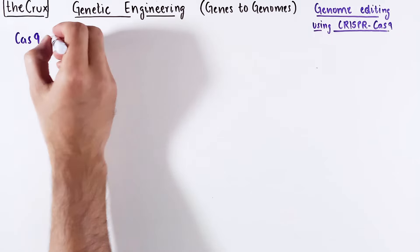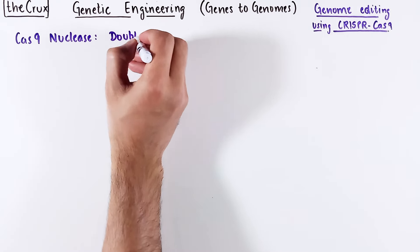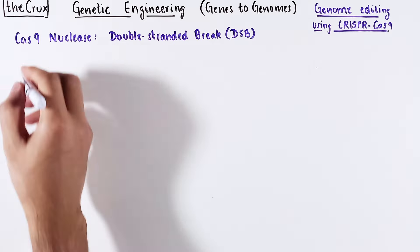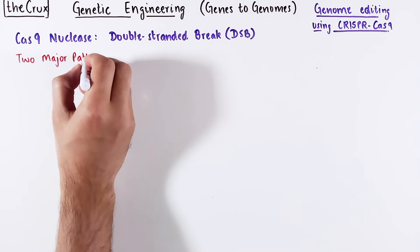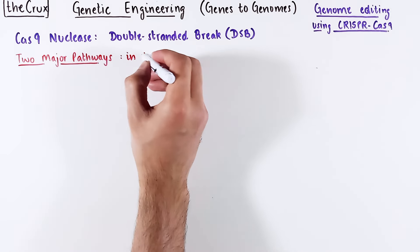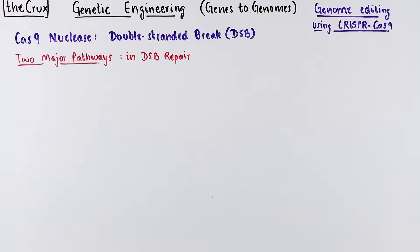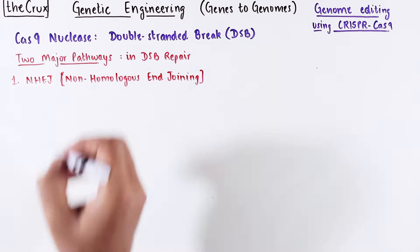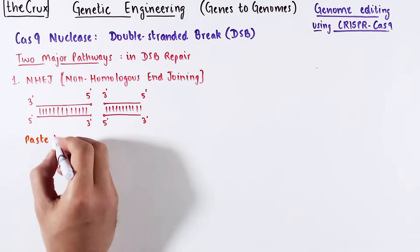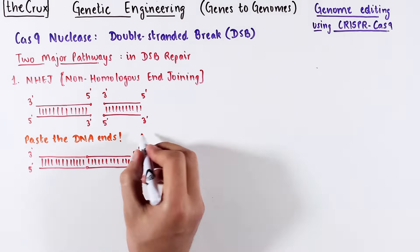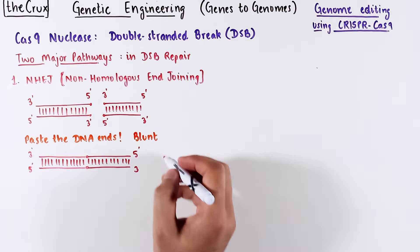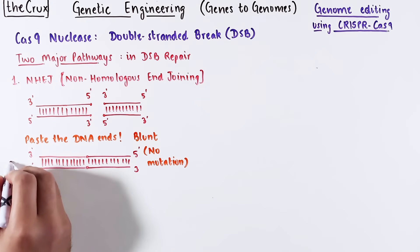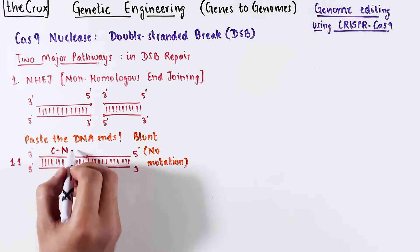By now you should be convinced that Cas9 nuclease is making a double-stranded DNA break in the target DNA. In eukaryotes, there are generally two major pathways to repair double-stranded breaks. One of them is called non-homologous end joining (NHEJ). Through this mechanism, a cell can paste the broken DNA back together. This works if you have a blunt DNA cut, and by this repair mechanism, no error or mutation is generated — this is called the classic non-homologous end joining mechanism.